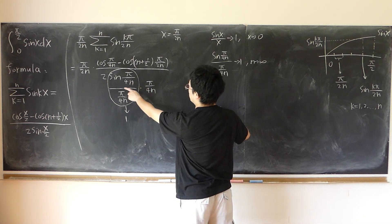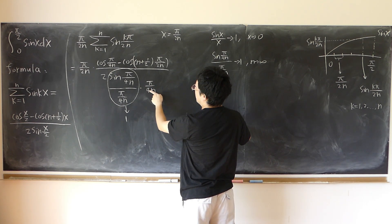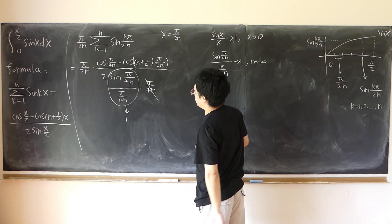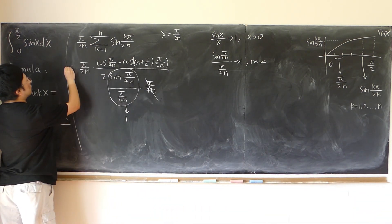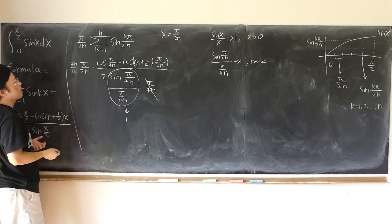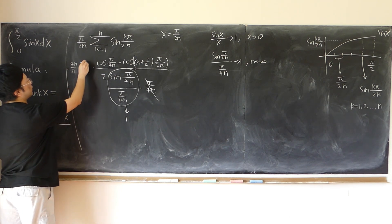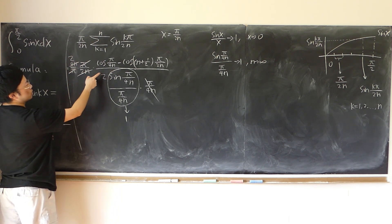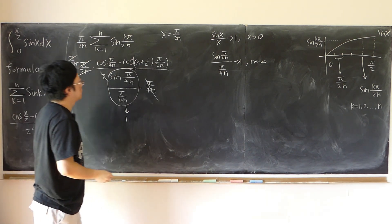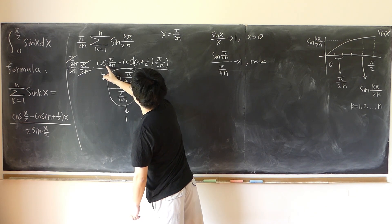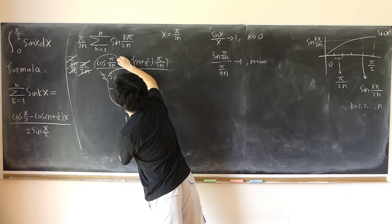On the denominator I have 2 times π/(4n), so flipping gives 4n/π. The factors of π and 2n simplify. Also, cosine(π/(4n)) approaches cosine(0) which equals 1. For the cosine term, cosine of (n + 1/2) times π/(2n) distributes to cosine of π/2 plus π/(4n), and as n approaches infinity this approaches cosine(π/2), which equals 0. So that term vanishes.